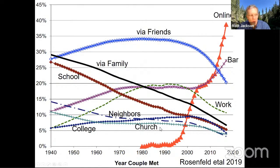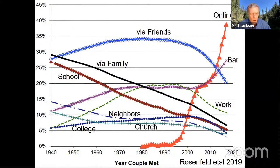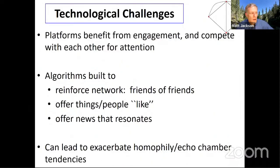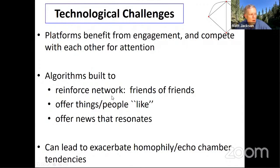This is a graph of how couples met, going back to the 1940s through 2018, from a study by sociologist Mark Rosenfeld at Stanford. People used to meet via family, via friends, via school, and now there's more and more meeting online and in social places and bars. When you meet online, you can actually look for people with certain selected characteristics — you can sort through things — and that leads to more segregated networks. Platforms benefit from engagement and compete with each other; these algorithms reinforce the network, offer news that resonates, and connect you with people that look like you, which can exacerbate homophily. We can become more connected and more segregated at the same time.